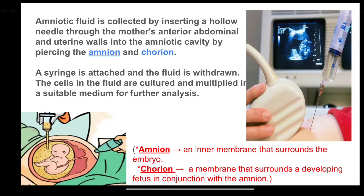The amnion is an inner membrane that surrounds the embryo. The chorion is a membrane that surrounds the developing fetus in conjunction with the amniotic fluid. A syringe is attached and the fluid is withdrawn. The cells in the fluid are cultured and multiplied in a suitable medium for further analysis.